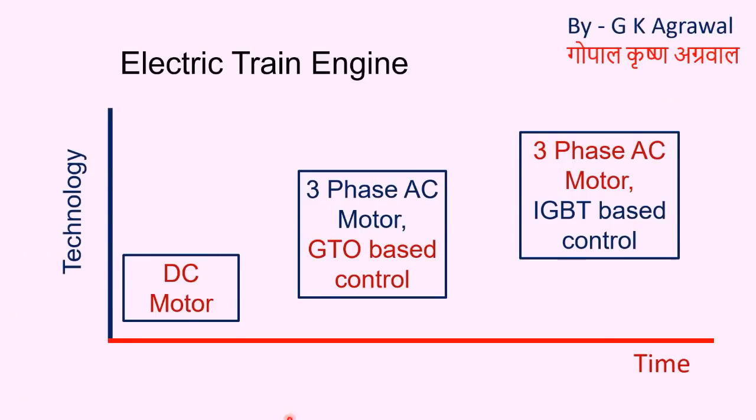Here I have shown technology improvement with time in electric train engine. In the olden days, DC motors were being used. Afterward, around year 2000 in India, 3-phase AC motors along with GTO-based control system came. And after some time, nowadays, 3-phase AC motors and IGBT-based control systems are used.